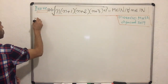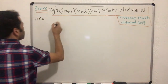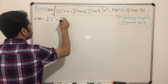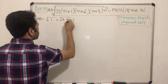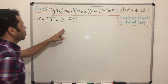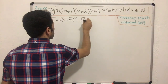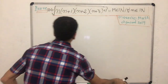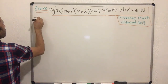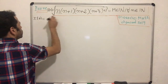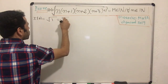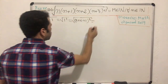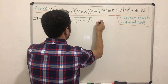Calculating i(0): plugging zero into the expression gives us one. I can rewrite that one as two times zero plus one, all squared — so i(0) equals one, which equals (2·0+1)².